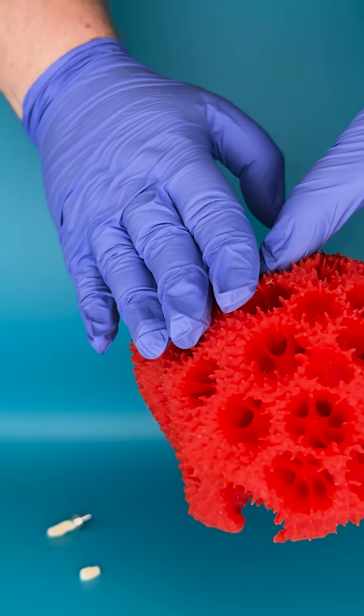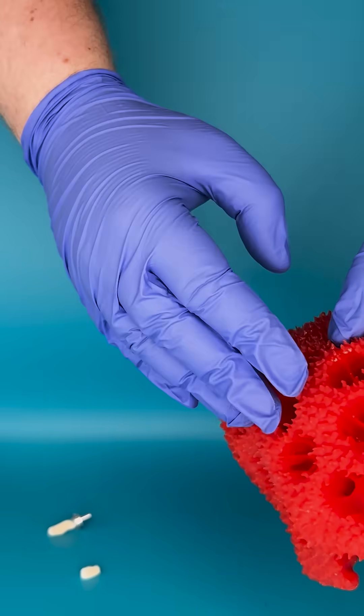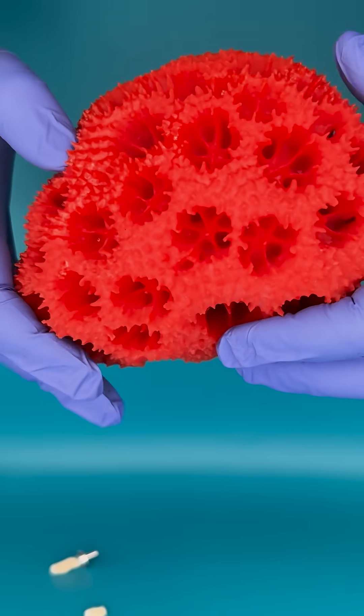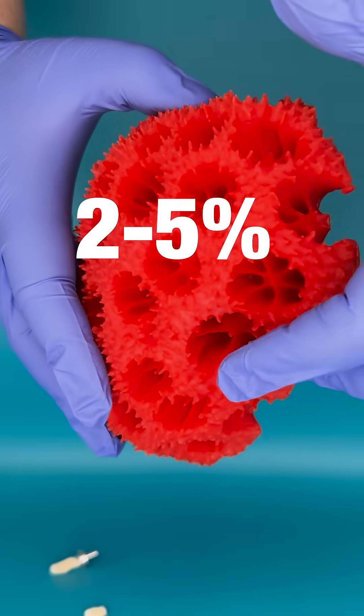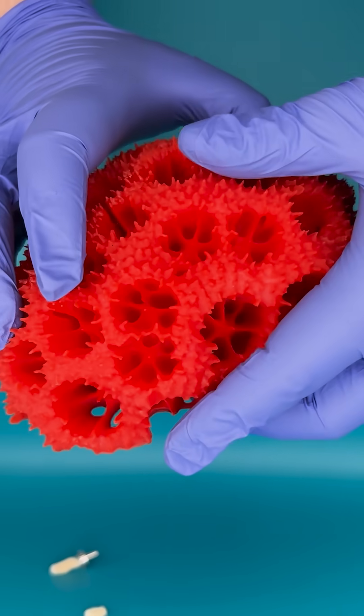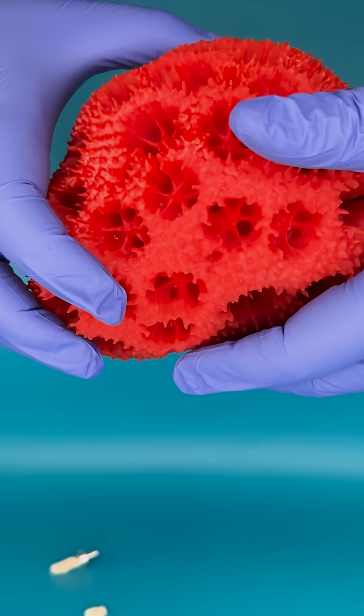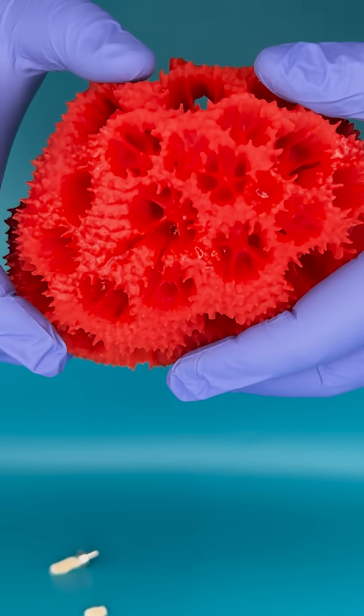The coral will take calcium and carbonate ions from the seawater and construct their skeletons. Alongside aragonite, their skeletons contain around two to five percent organic material. This organic material is mostly found within the centres of calcification that act as a template to form the macroskeleton.